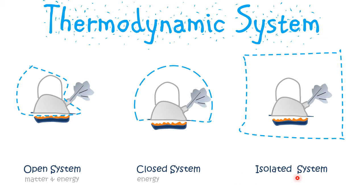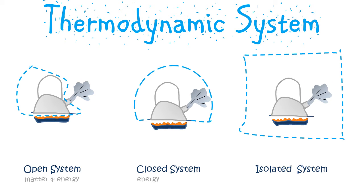In this third case, the stove is also included as part of the boundary. So now within the system we have the atmosphere, the stove — which is the heat source — and the kettle, and these together form an isolated system.